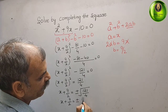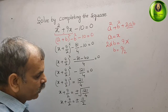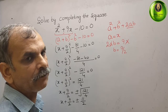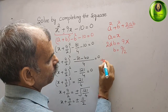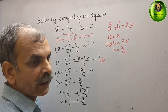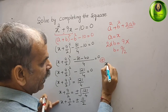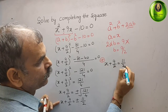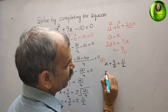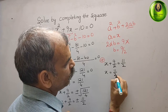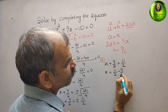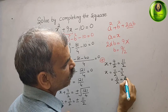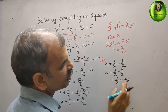There are two cases: plus and minus. First we take the plus case: x + 9/2 equals 11 by 2. Bring 9/2 to the right side — we get x equals 11 by 2 minus 9 by 2, that is 2 by 2, which equals 1. So the first solution is x equals 1.